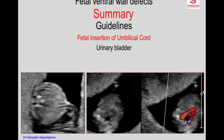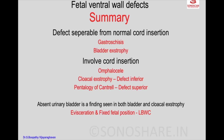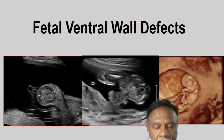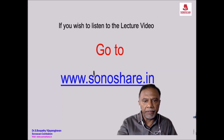Almost 100% of anterior abdominal wall defects are diagnosed even in the first trimester. The diagnostic algorithm notes that fixity of part of the fetus is seen in limb body wall complex, while abdominal amniotic bands are seen in abdominoschisis. Having gone through the preview, if you wish to listen to the main lecture video, go to sonoshare.in.